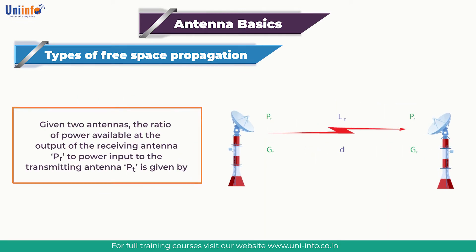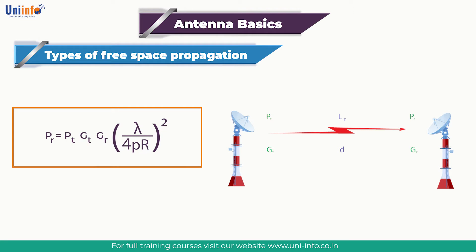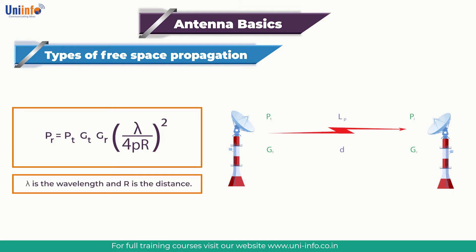Given two antennas, the ratio of power available at the output of the receiving antenna PR to power input to the transmitting antenna PT is given by: PR = PT · GT · GR · (λ / 4πR)², where GT and GR are the antenna gains of the transmitting and receiving antennas respectively. Lambda is the wavelength and R is the distance.